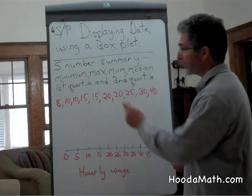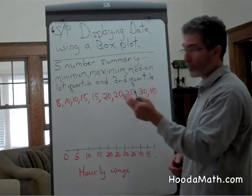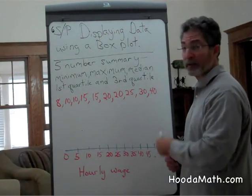A five number summary shows the minimum, maximum, median, first quartile, and third quartile of a set of data.